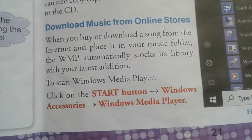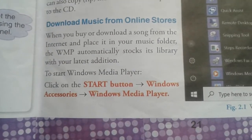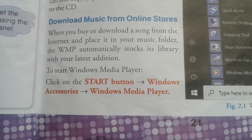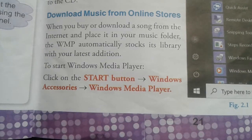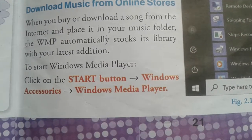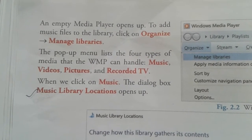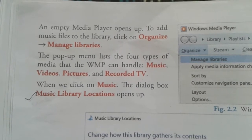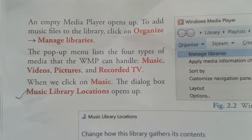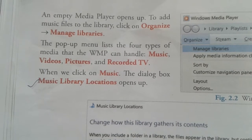First, download music from an online store and place it in your music folder. Windows Media Player automatically stocks its library with the latest additions. To start Windows Media Player, click the Start button, go to Windows Accessories, then Windows Media Player. An empty media player opens. To add music files to the library, click Organize, then Manage Libraries.